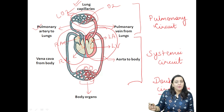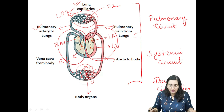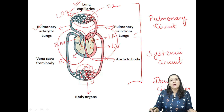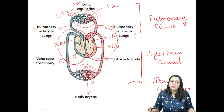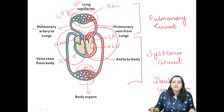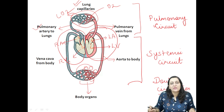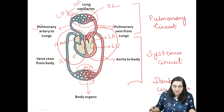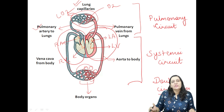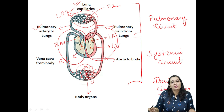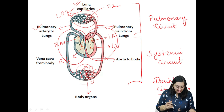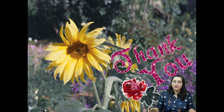This is all about how blood flows in our body and how the different components of the circulatory system work in a coordinated manner. In our next video, we will discuss further details about the structure of the heart. Until then, thanks a lot for listening.